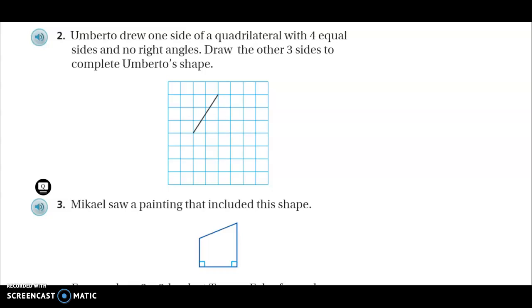Number two. Umberto drew one side of a quadrilateral with four equal sides and no right angles. Draw the other three sides to complete Umberto's shape. So here's the clues. He drew one of these sides. Now the quadrilateral has to have four equal sides, but no right angles. So think, what shape do you know has four equal sides and no right angles? Only one shape meets that requirement. So we're going to draw that.